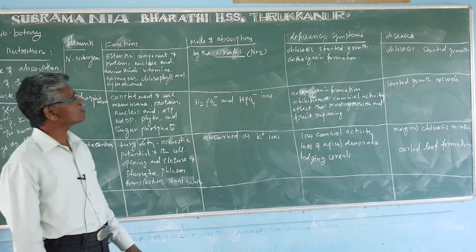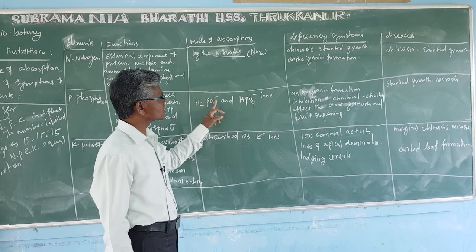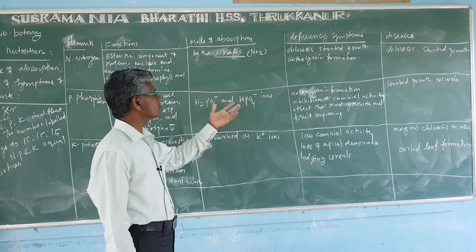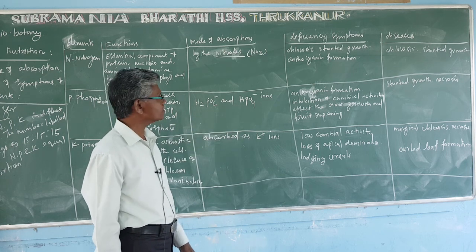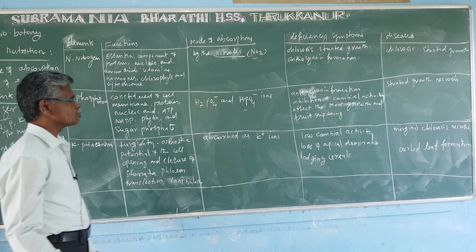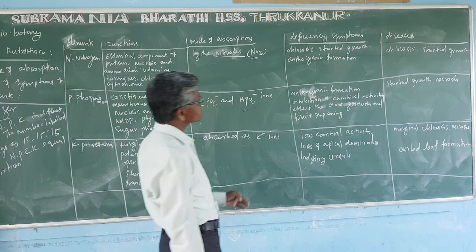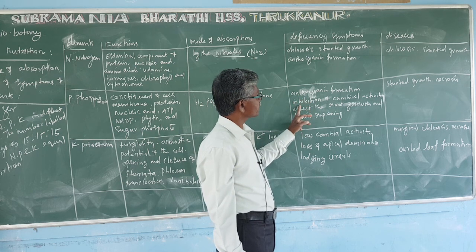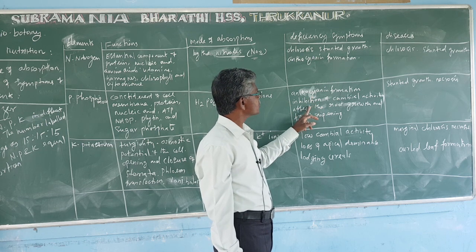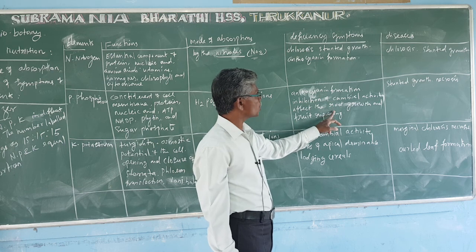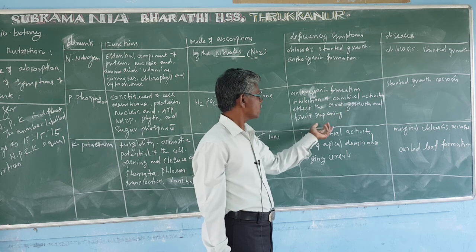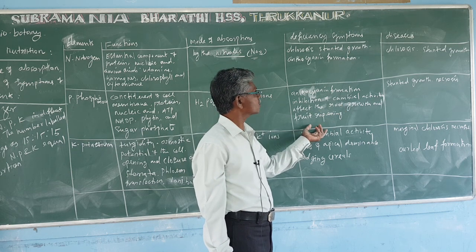The mode of absorption of phosphorus is as H₂PO₄⁻ ions. So the plant absorbs phosphorus as H₂PO₄⁻ ions. Deficiency symptoms include anthocyanin formation and inhibition of cambial activity.